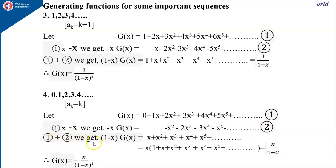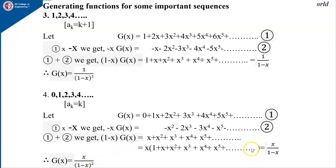Adding equations 1 and 2, we get (1 − x)·g(x) = x + x² + x³ + x⁴ + ... Taking out common factor x, we get x·(1 + x + x² + ...) = x · 1/(1−x). Therefore g(x) = x/(1−x)², bringing (1−x) to the denominator gives (1−x)².